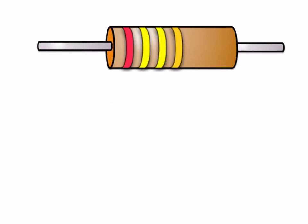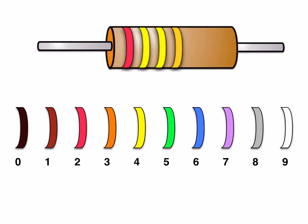Let's try another. So now we've got red, yellow, yellow, gold. Red represents two. Yellow represents four. Put four zeros down. So now it's 240,000 ohms.